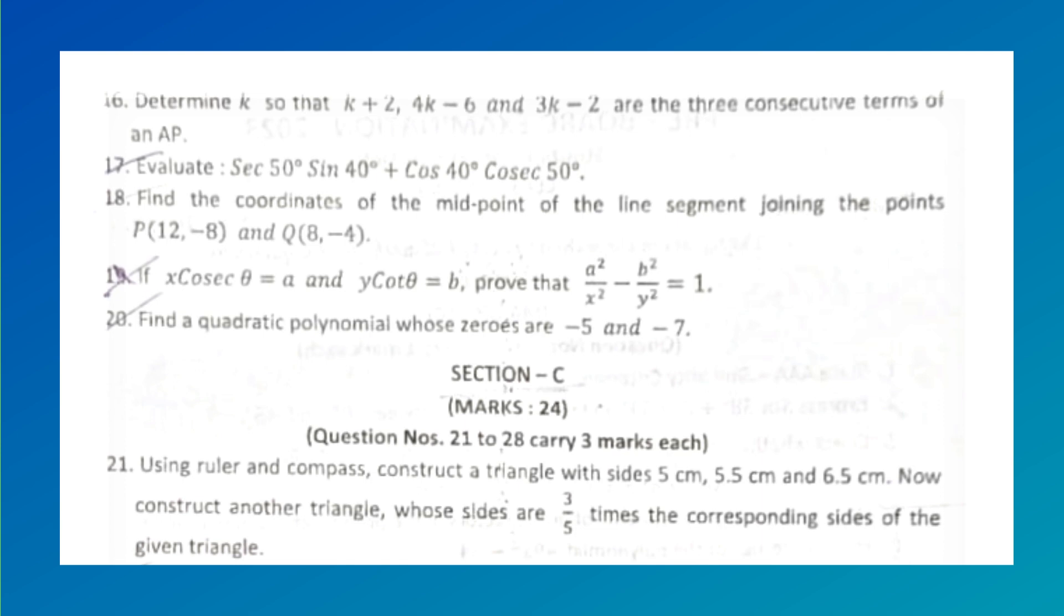Determine k so that k+2, 4k-6, and 3k-2 are three consecutive terms of an AP. Evaluate sec 50° sin 40° + cos 40° cos 50°. Find the coordinates of the midpoint of the line segment joining points P(12, -8) and Q(8, -4). If x cosec θ = a and y cot θ = b, prove that a²/x² - b²/y² = 1. Find a quadratic polynomial whose zeros are -5 and -7.